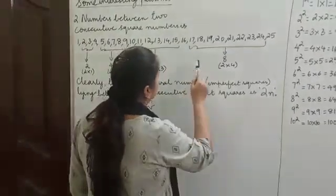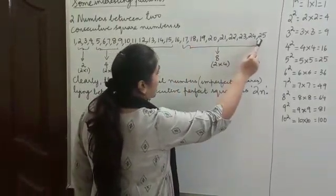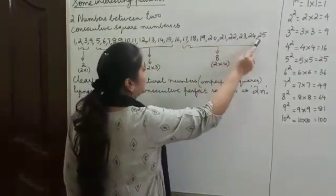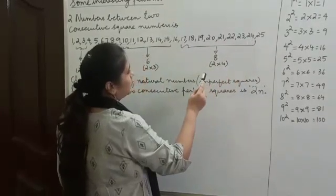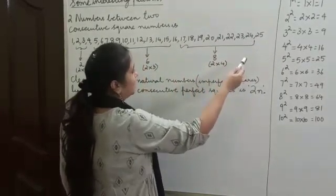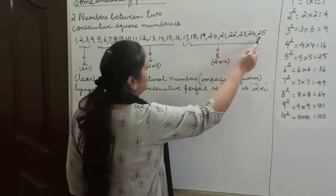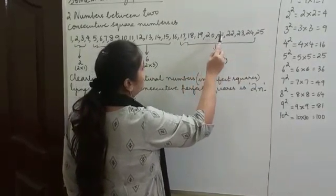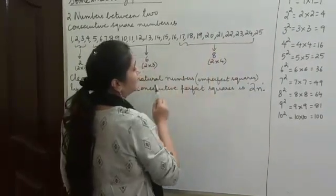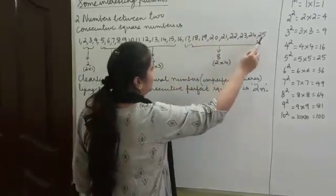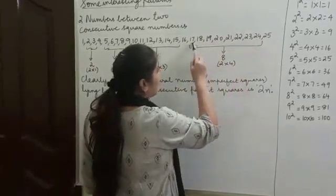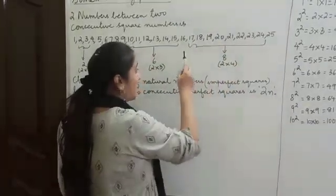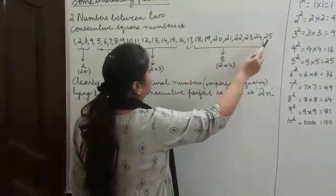Going on with this, 16 and 25 are perfect squares. In fact, 16 and 25 are consecutive perfect square numbers that come one after the other. Between 16 and 25, we have 8 imperfect squares: 17, 18, 19, 20, 21, 22, 23, and 24. Between 16 and 25, we have 8 natural numbers or imperfect squares.